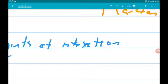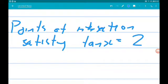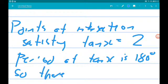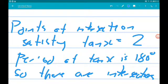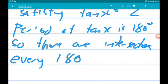If we can satisfy tan of x is equal to 2. Now the period of tan of x is 180 degrees. So, there are intersections at every 180 degrees, not 360.